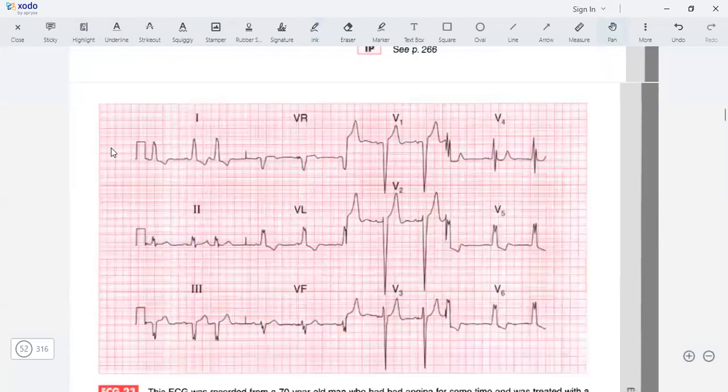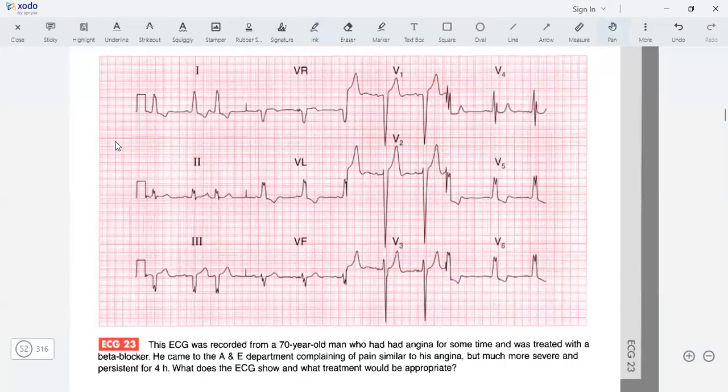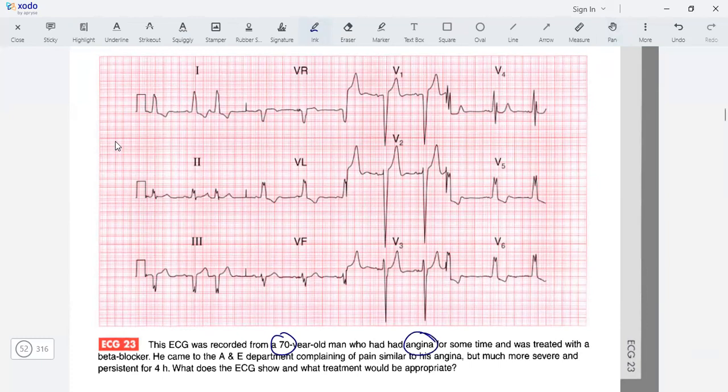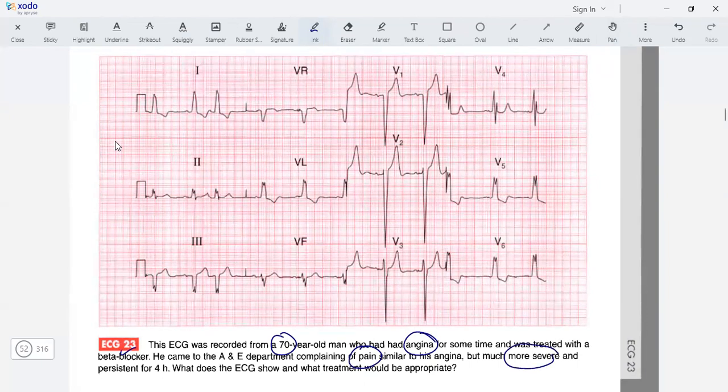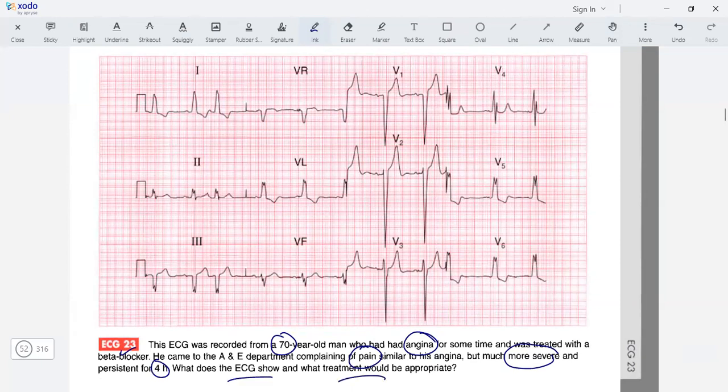Moving to the second ECG: a 70-year-old man with angina treated with a beta blocker, now with severe pain similar to angina, persistent for four hours. The rate is normal, but the rhythm seems to be irregular. Let's check out the P waves. I can see P-R, P-R, and this is a premature complex.